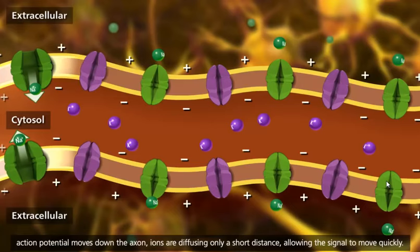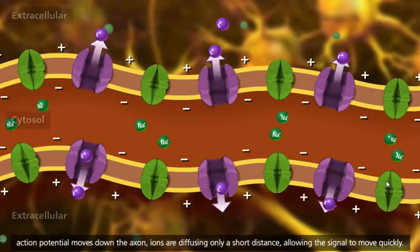As the action potential moves down the axon, ions are diffusing only a short distance, allowing the signal to move quickly.